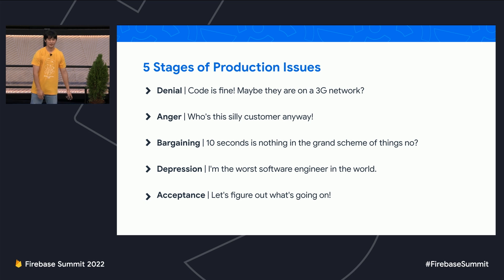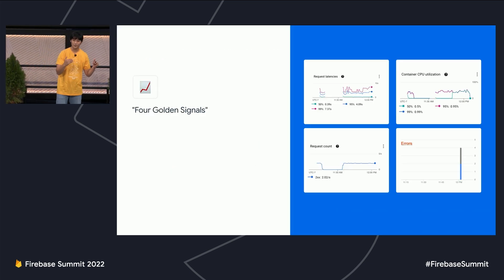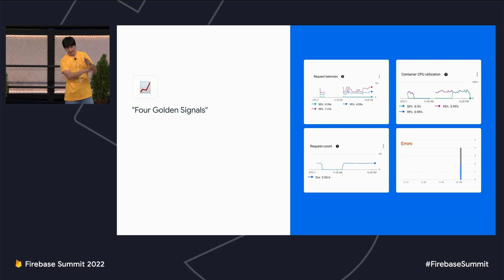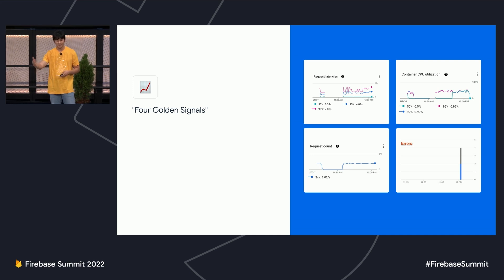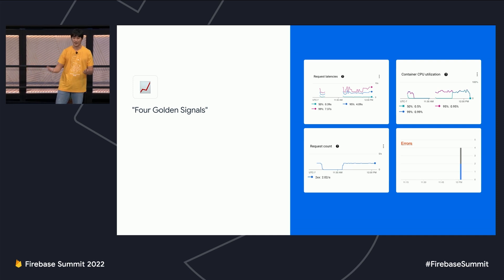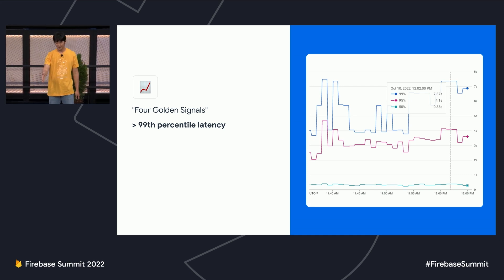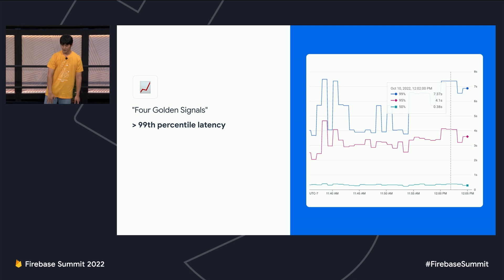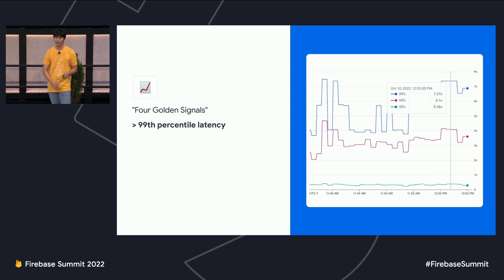So where do we start? I think a good place to start is with the dashboard. There is a thing called the four golden signals that SRE folks like to talk about: request latency, utilization of CPU and memory, request count, and errors. She notices something on the request latency — the 99th percentile is indeed super slow, taking over seven seconds to respond.